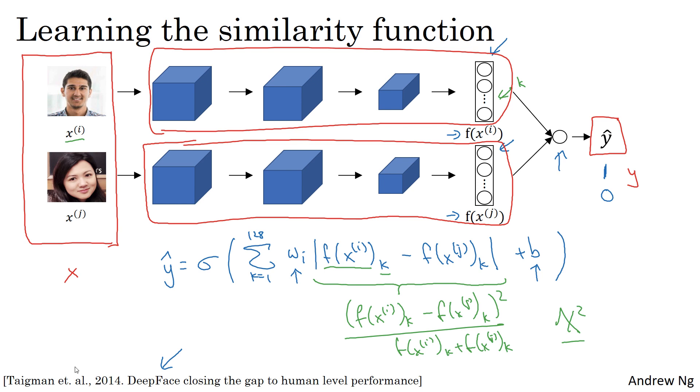I just want to mention one computational trick that can help your deployment significantly. If this is the new image, an employee walking in hoping the turnstile will open for them, and this is from your database image, instead of having to compute this embedding every single time, you can actually pre-compute that.